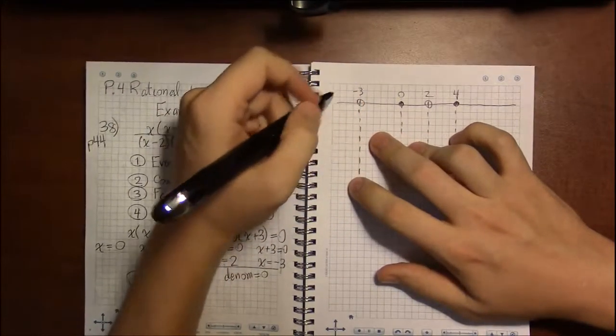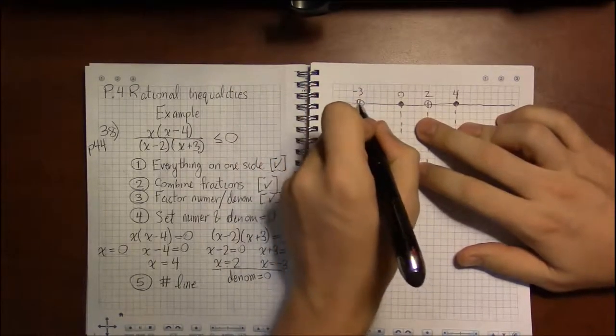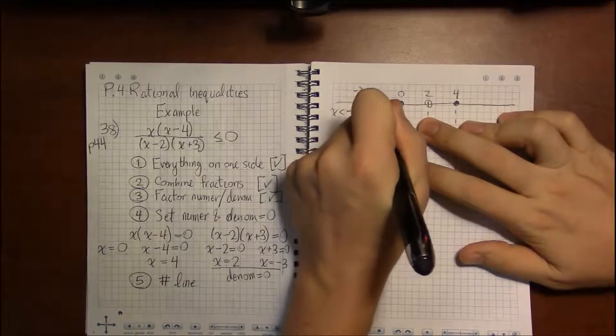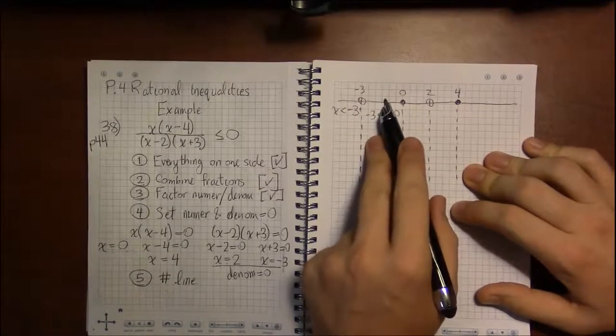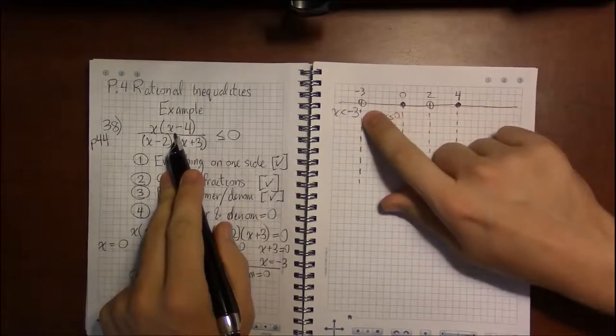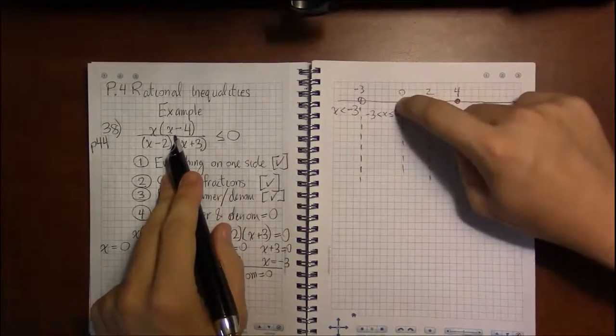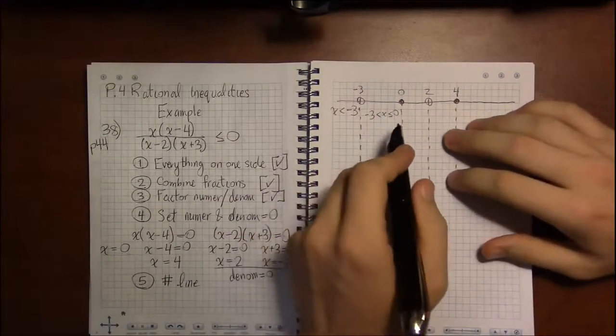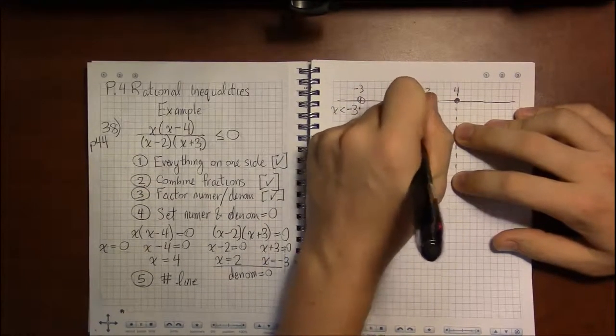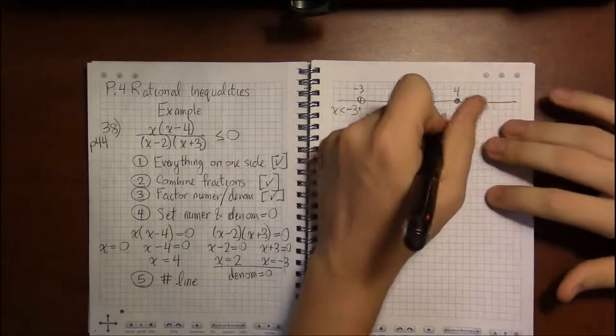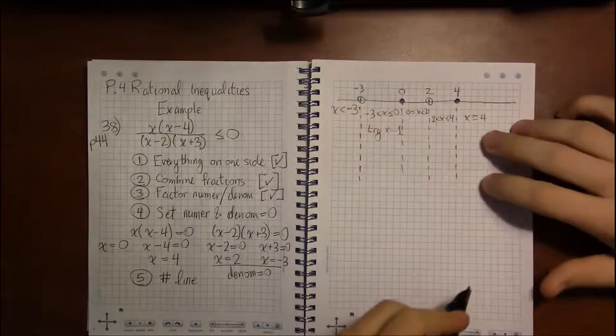All right, so this region is everything here is all x values less than minus 3. This region is everything between minus 3 and 0, but we can take 0. When you pick a test value, you actually can't pick the endpoints. You have to pick something in between, because we know this is going to be 0. That doesn't tell us what's going to happen in between here. We want to know, inside, is it above or below? 0 less than or equal to x less than 2 is the next interval, 2 less than x less than or equal to 4. And then, everything to the right of 4 is all x values greater than or equal to 4.